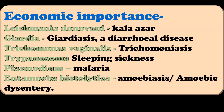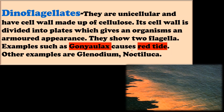The third group is dinoflagellates. They are unicellular and have a cell wall made up of cellulose. Their cell wall is divided into plates which gives the organism an armoured appearance. They show two flagella. Their examples are Gonyaulax, Glenodinium and Noctiluca. As mentioned earlier, Gonyaulax causes Red Tide or algal blooms.